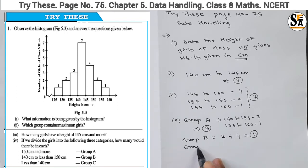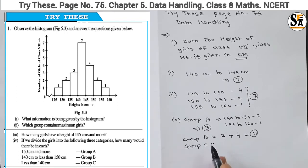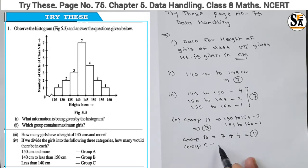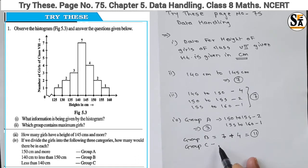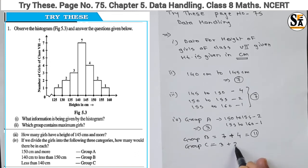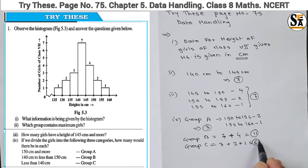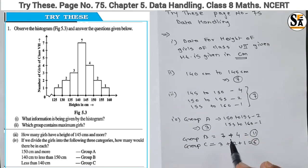For Group C, the range is less than 140 centimeters. There are three intervals here: from 135 to 140 there are 3 girls, from 130 to 135 there are 2 girls, and from 125 to 130 there is 1 girl. So the total is 3 plus 2 plus 1, which equals 6 girls.